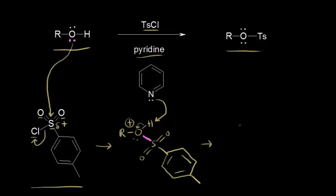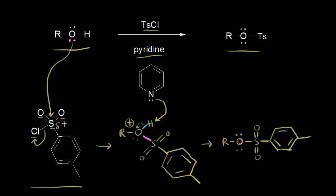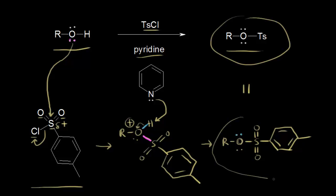Let's go ahead and draw what we would form. We would have our R group, an oxygen with now two lone pairs of electrons, and we would have our sulfur double bonded to this oxygen and double bonded to this oxygen, and then we would have our ring. We formed our toluene sulfonate ester, also called a tosylate. This compound and this compound are the same — the top way is just a way to abbreviate it — and so we formed our tosylate.